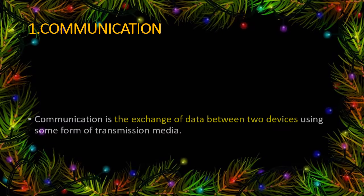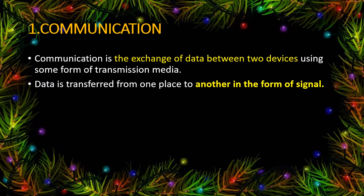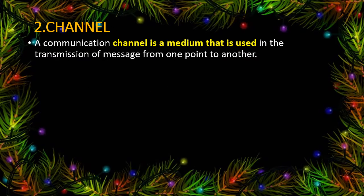A communication channel is the exchange of data between two devices using any transmission media, like fiber optics for wired, or wireless — satellite and microwave can also be used. Data is transferred from one place in the form of signals, either analog or digital. A communication channel is used to transfer data.